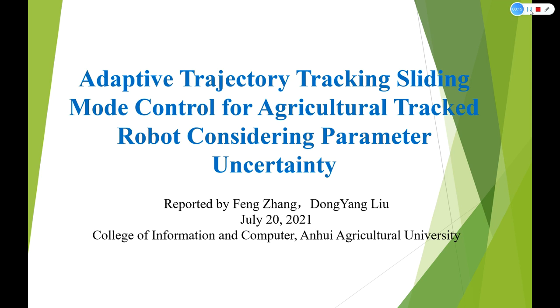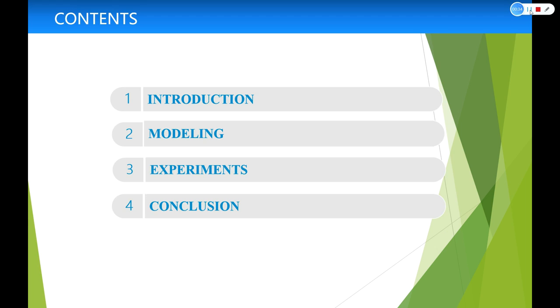I would like to present the paper, Adaptive Trajectory Tracking Sliding Mode Control for Agricultural Tracking Robot Considering Parameter Uncertainty. My presentation will cover these four aspects: Introduction, Modeling, Experiments, and Conclusion.